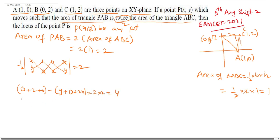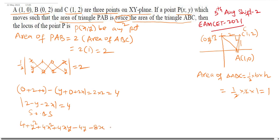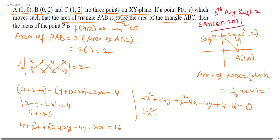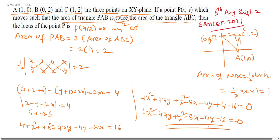Simplifying: |2 - y - 2x| = 4. Squaring both sides: (2 - y - 2x)² = 16, expanding gives 4 + y² + 4x² + 4xy - 4y - 8x = 16. Rearranging: 4x² + 4xy + y² - 8x - 4y - 12 = 0. This is the locus of point P(x, y).